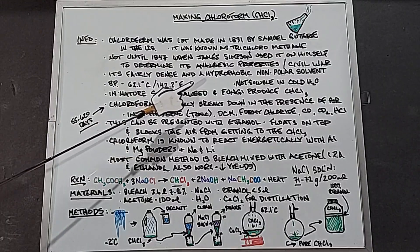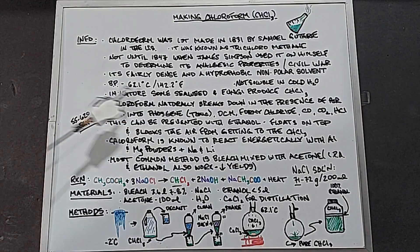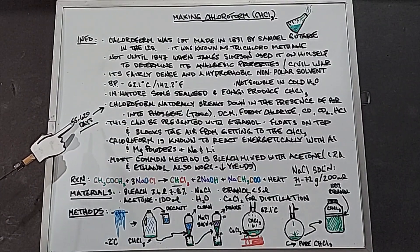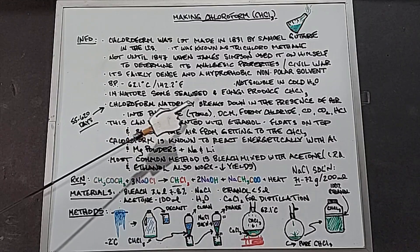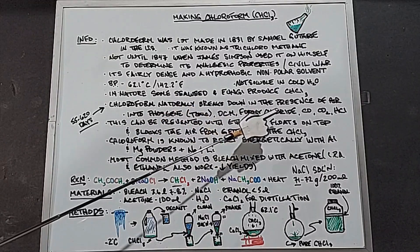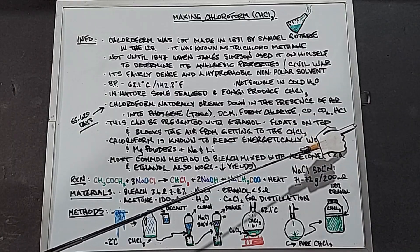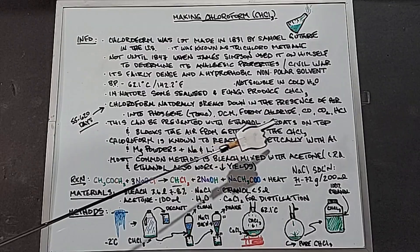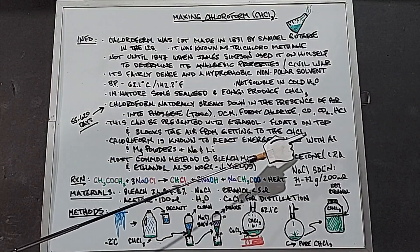I did not know this, but in nature, chloroform is actually formed by some seaweed and fungi. Chloroform naturally breaks down in the presence of air between 55 and 620 days. It usually breaks down into phosgene, which is pretty toxic, but it can also break down into dichloromethane, formyl chloride, carbon monoxide, carbon dioxide, and hydrogen chloride. Breakdown can be prevented with ethanol, which floats on the top and simply blocks the air from getting to the chloroform.